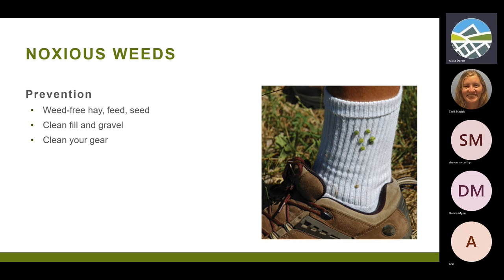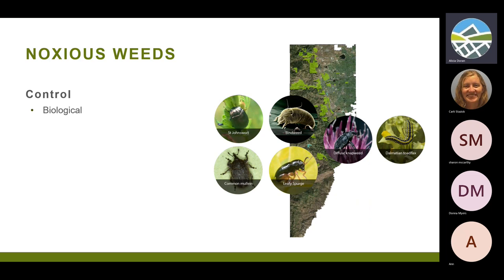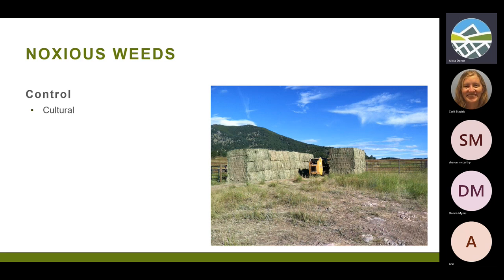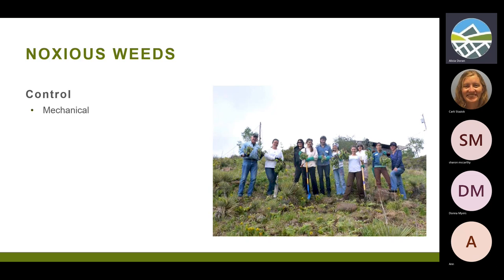Prevention is pretty simple — make sure that you clean seeds off your shoes and gear before leaving an area. For control, there are four different main types. Biological control uses organisms to attack the different parts of the plant. There's chemical control. There's cultural control, using things like mulch, timing, or reseeding. And there's mechanical — you can pull some weeds, but with others, you can't.